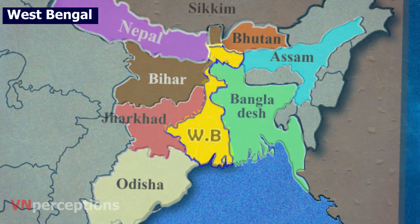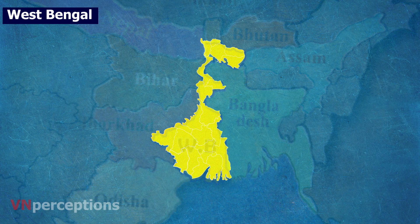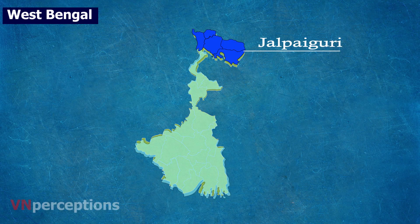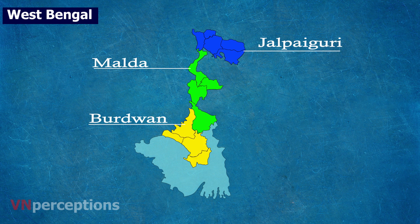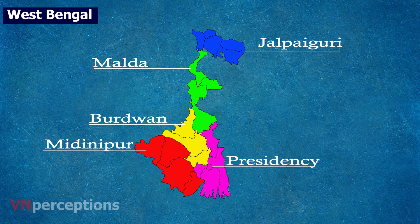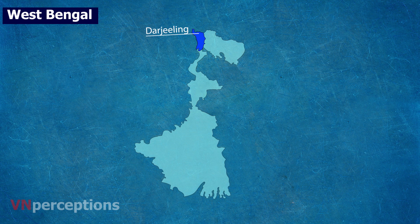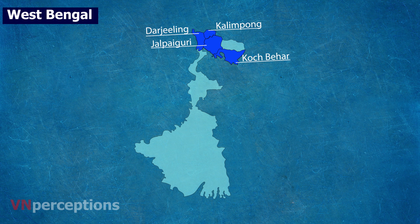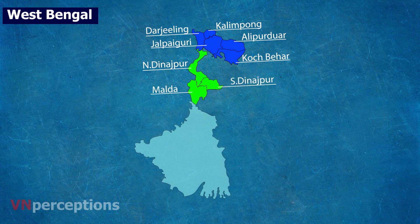West Bengal has five administrative divisions: the Jalpaiguri division, Malda division, Burdwan division, Medinipur division, and Presidency division. Darjeeling, Jalpaiguri, Koch Bihar, Kalimpong and Alipurduar come in the Jalpaiguri division. Then Uttar Dinajpur, Dakshin Dinajpur, Malda and Murshidabad come in the Malda division.